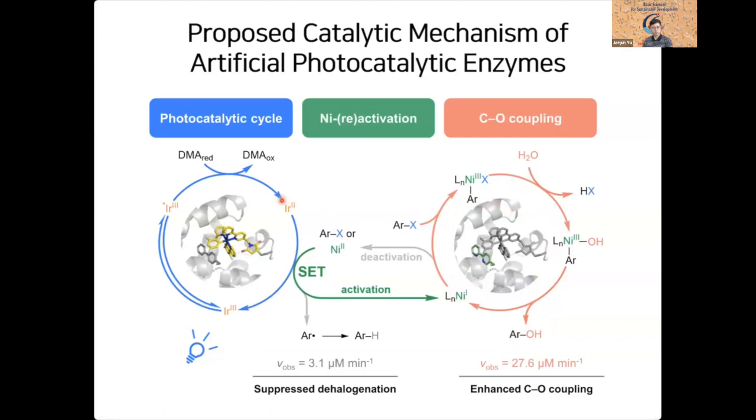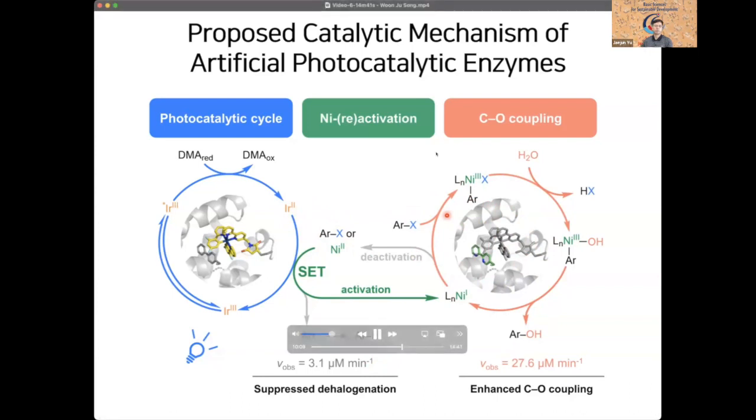If the electron transfer between iridium catalysts and the nickel ones are not so efficient, then iridium 2 species can directly react with this aryl halide and that will undergo dehalogenation. As I showed you earlier, our artificial photocatalytic enzymes have quite high selectivity indicating that iridium and the nickel species basically undergo efficient single electron transfer.